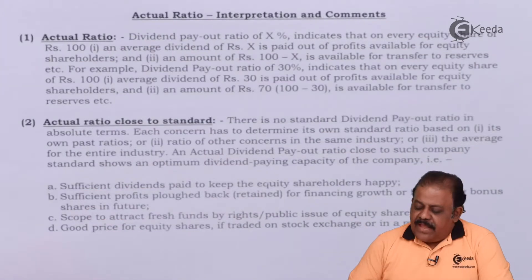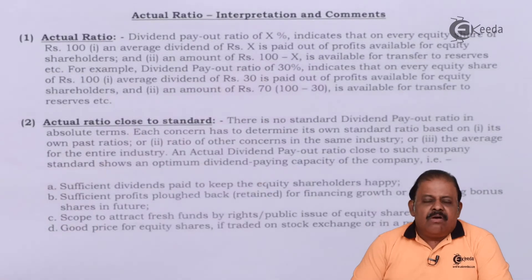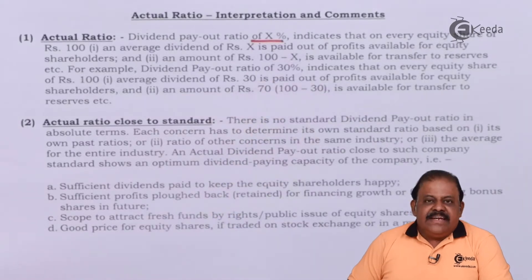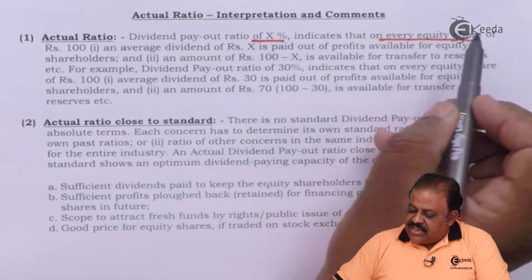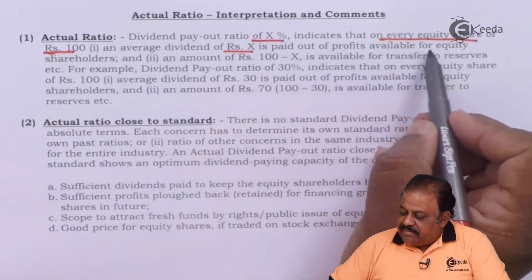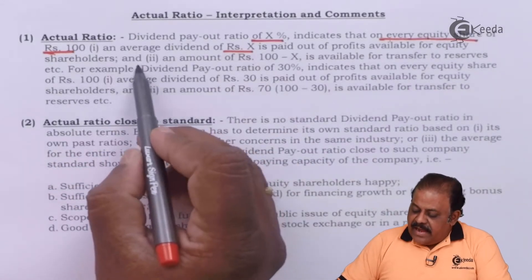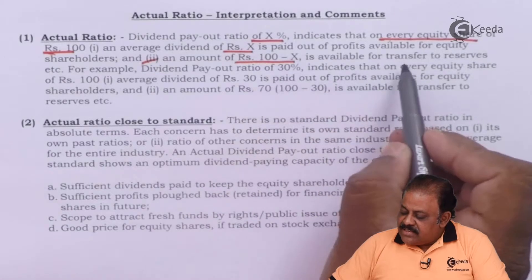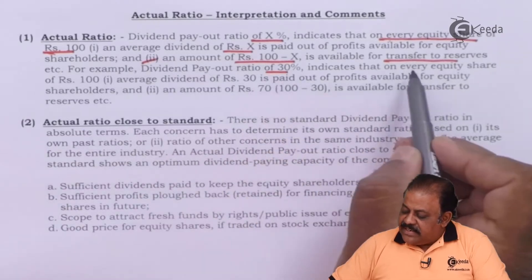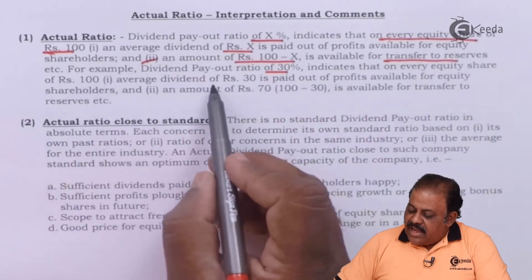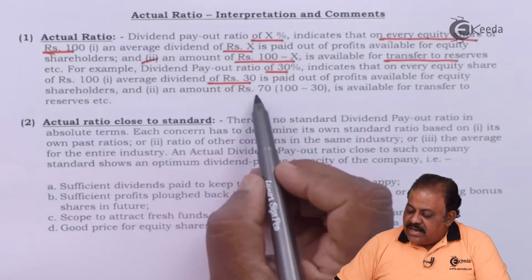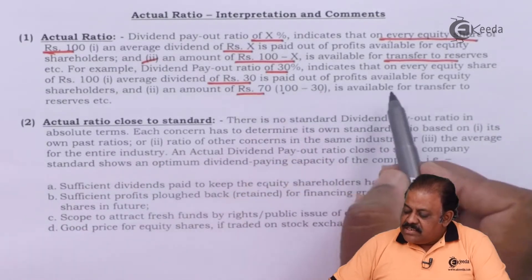Regarding interpretation: a dividend payout ratio of X% indicates that on every equity share of Rs. 100, an average dividend of Rs. X is paid out of profit available for equity shareholders, and an amount of Rs. (100 minus X) is available for transfer to reserves. For example, a dividend payout ratio of 30% indicates that on every equity share of Rs. 100, an average dividend of Rs. 30 is paid out of profit available for equity shareholders.